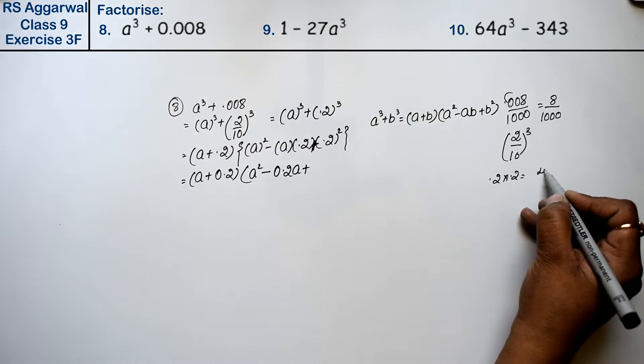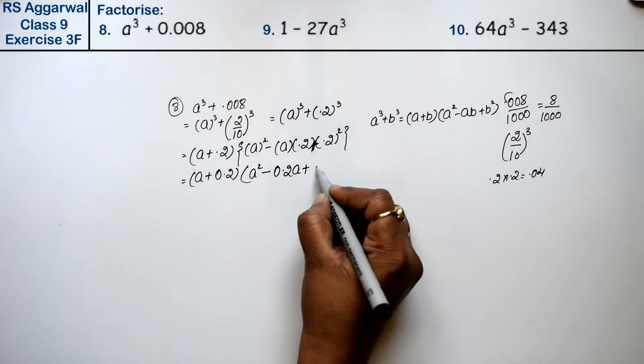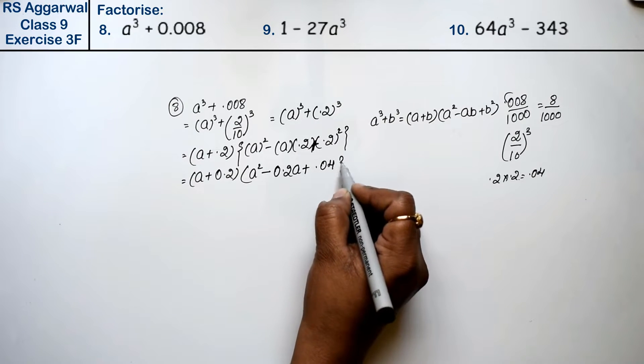0.2 times 0.2 is 0.04. So the answer is (a plus 0.2)(a² minus 0.2a plus 0.04).